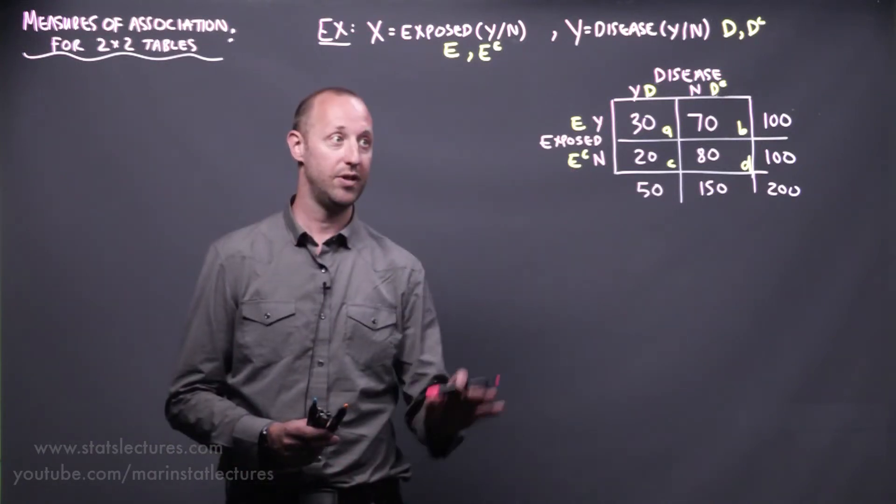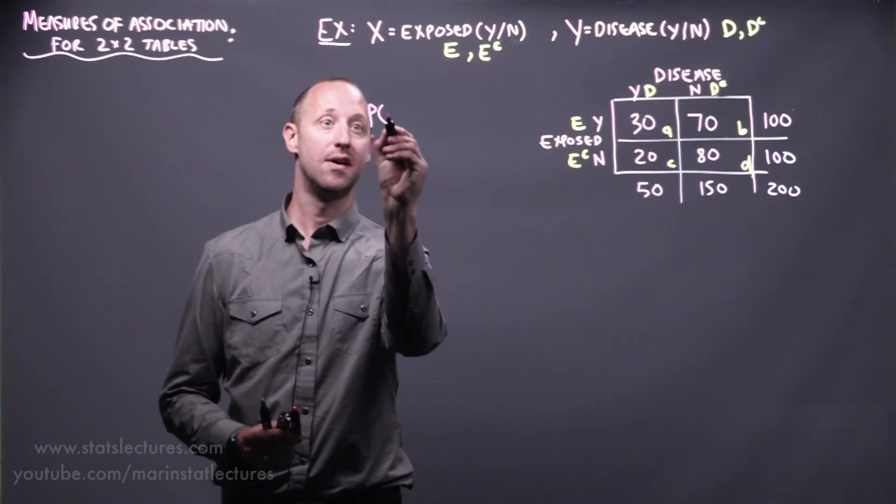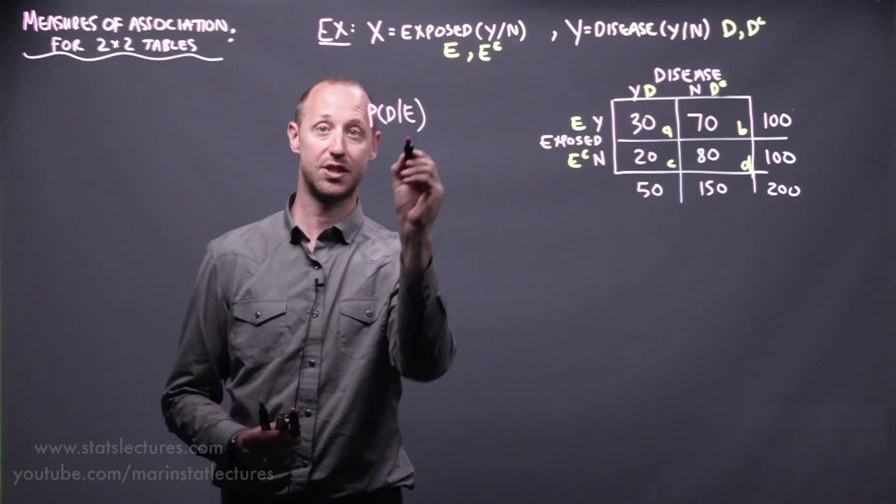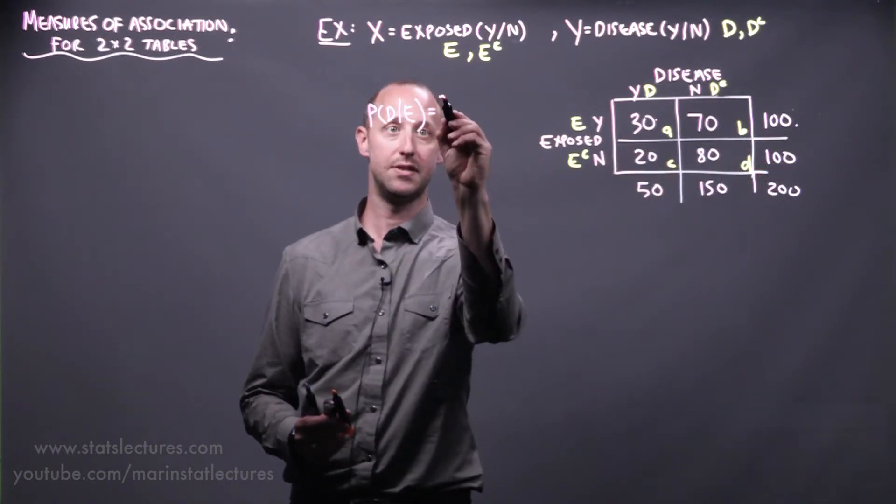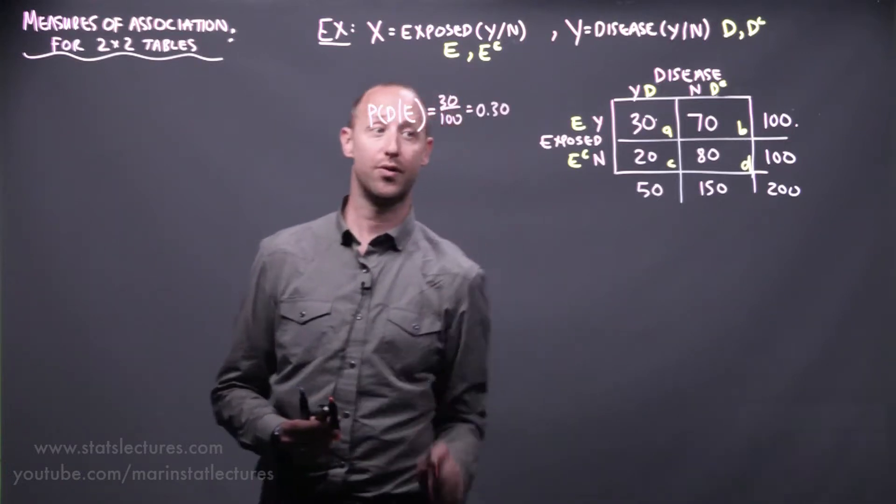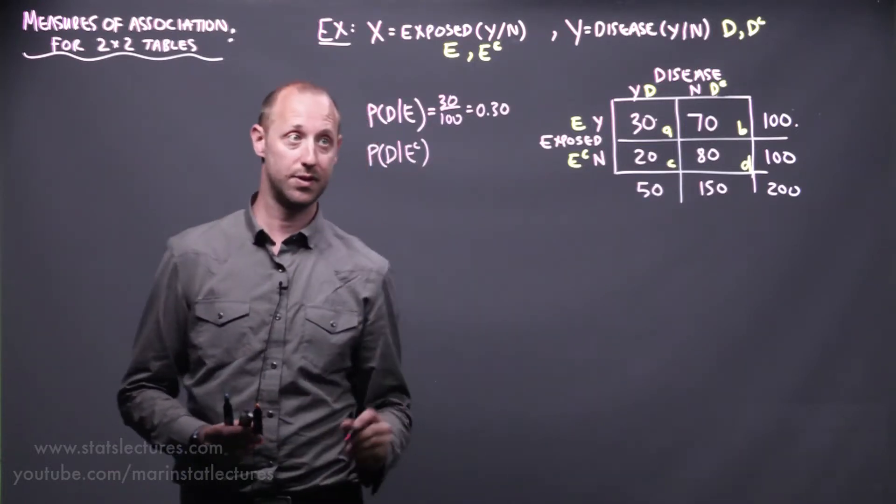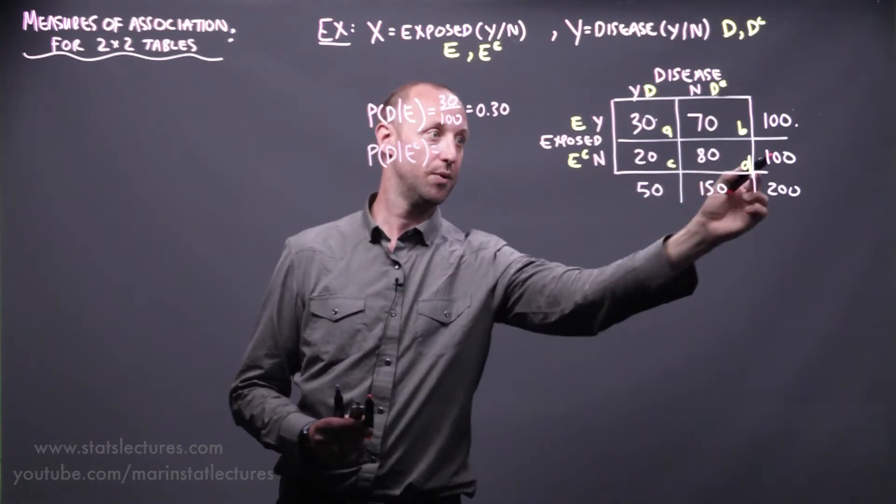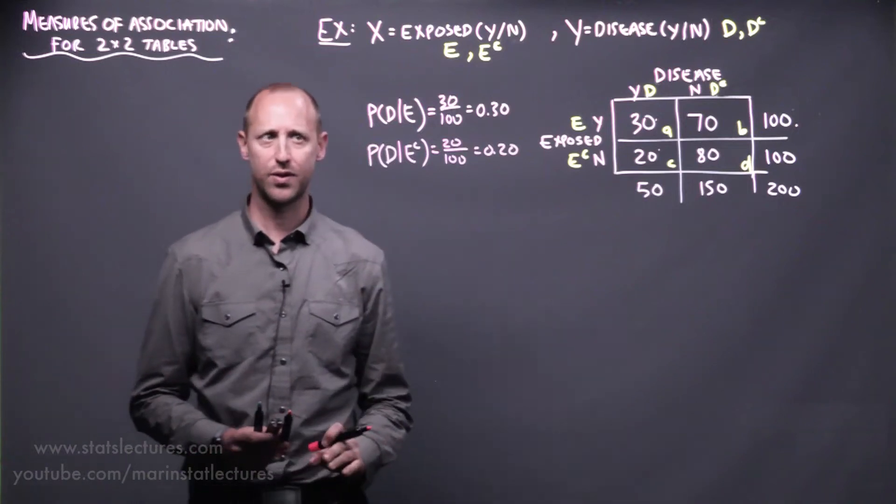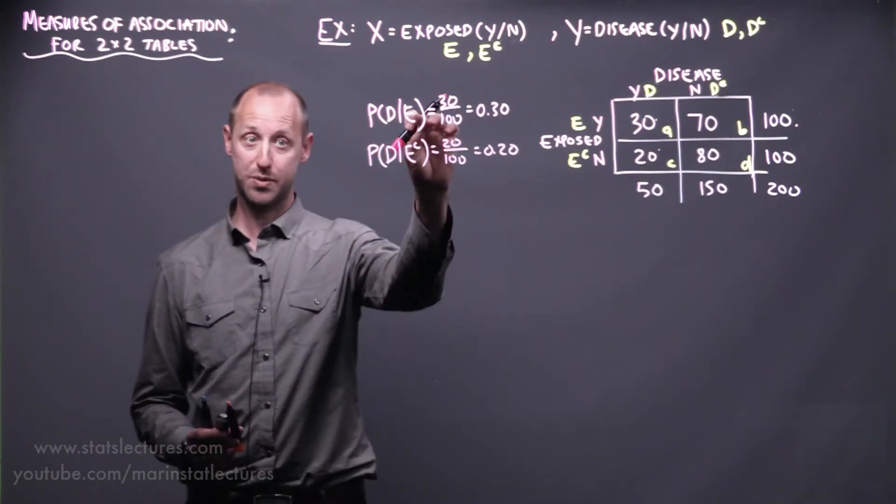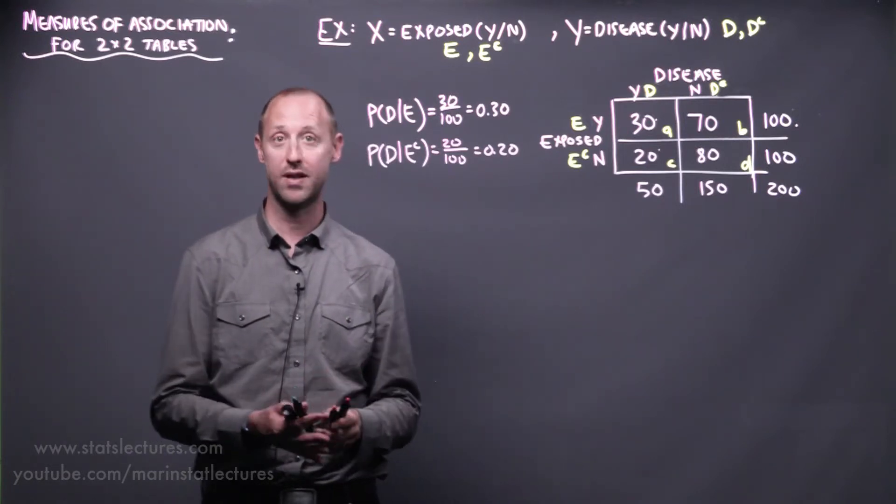The probabilities that we generally want to look at comparing are, what's the probability of developing the disease given that someone is exposed? That's looking at out of these 100 individuals who were exposed to the risk factor, 30 developed the disease. So 0.30 or 30%. And what's the probability of disease for those who are not exposed? 0.20 or 20%. We'd like to compare what's the probability of getting the disease for those who were exposed to the risk factor and those who weren't. We can think of comparing these two on an additive scale or on a relative scale.